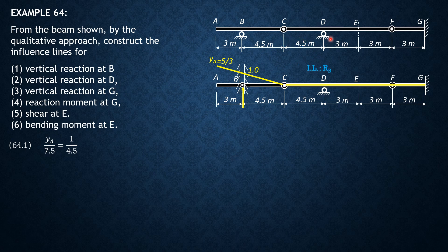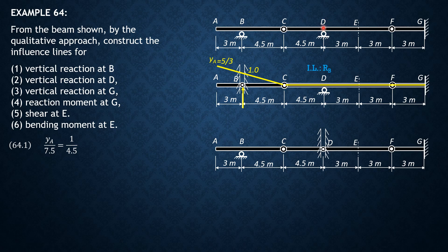For the vertical reaction at D, again like what we did for B, we remove the capacity of D to resist upward vertical reaction. Our ruler is attached on this smooth slotted joint. Then if we push this upward, because this remains solid, it will rotate about F and look like that. Then C will also rise and rotate about B. So the influence line for reaction at D will look like this. This portion remains straight and is unaffected.